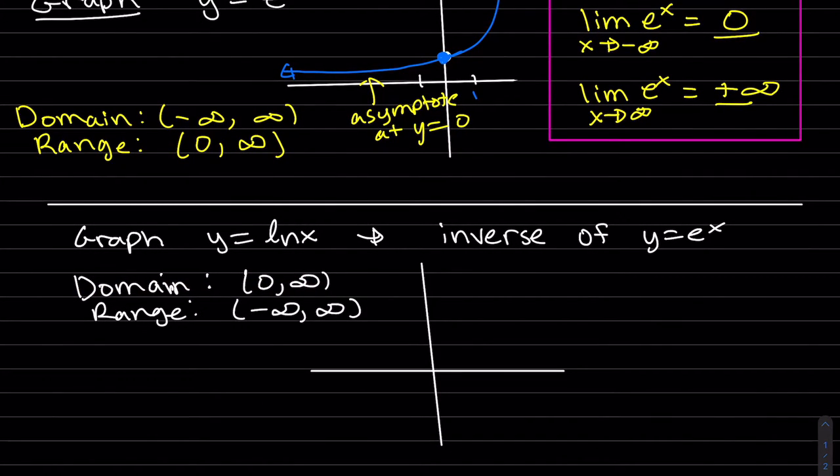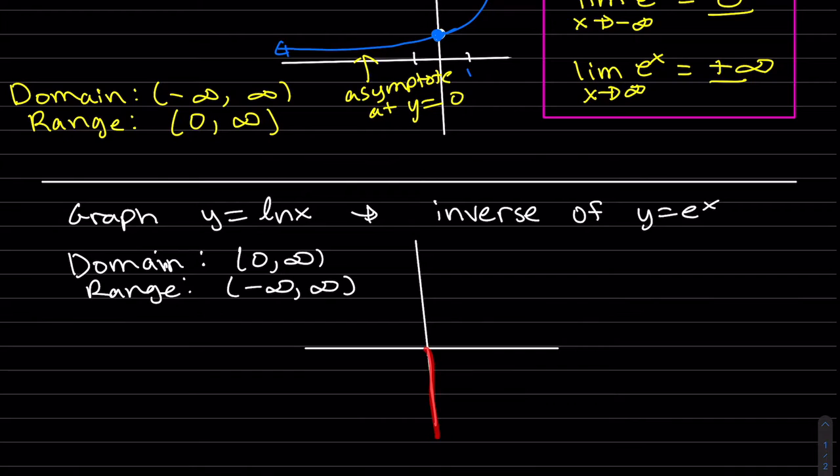Also, an asymptote at y equals 0 makes an asymptote at x equals 0. So down here. Instead of here, it's here. At this point here is 0, 1. This is 1, 0. X and y exchange.